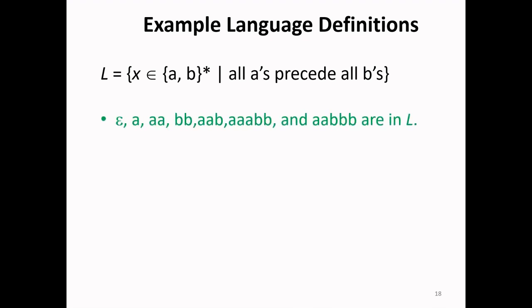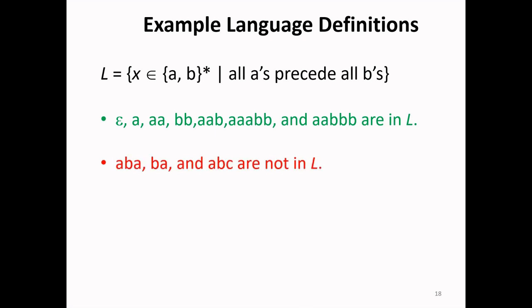For example, possible strings of this language include epsilon, A, AA, BB, A's followed by B's — all cases where all A's precede all B's. So all these strings are present in the language.